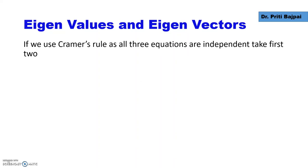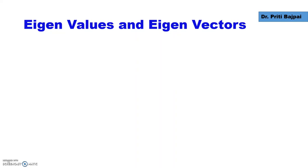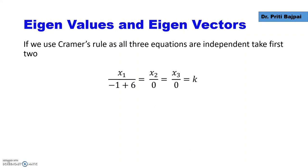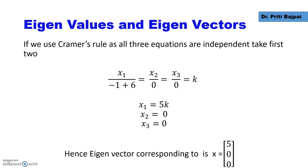Using Cramer's rule on these equations, we get x1 upon the determinant giving 5, x2 upon 0, and x3 upon 0. Setting these equal to k gives x1 equals 5k, x2 equals 0, x3 equals 0. Hence the eigenvector corresponding to lambda equals 4 is x equals [5, 0, 0].